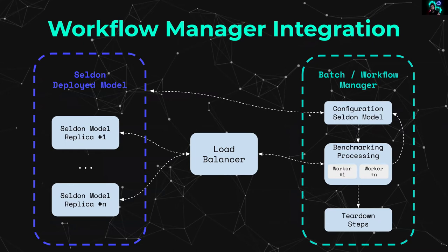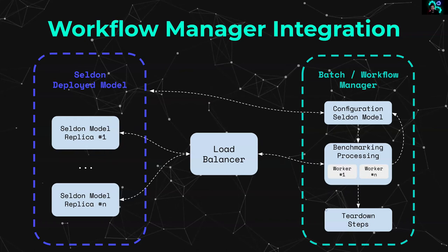The workflow consists of a first step to deploy or configure an existing Seldon deployment — we saw we can choose parameters like number of requests, memory, CPUs, threads, workers, and replicas. Then, once it's created, updated, and running with all configured requirements, we run the benchmarking step — either Vegeta or GHZ — which runs the performance evaluation with a particular set of parameters: number of CPUs, number of workers, expected rates, duration, and so on.